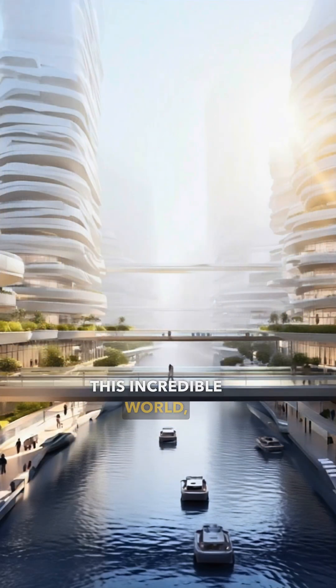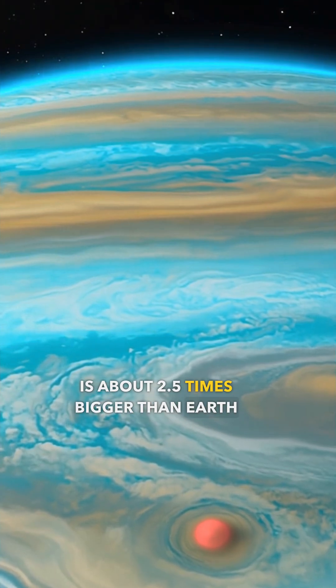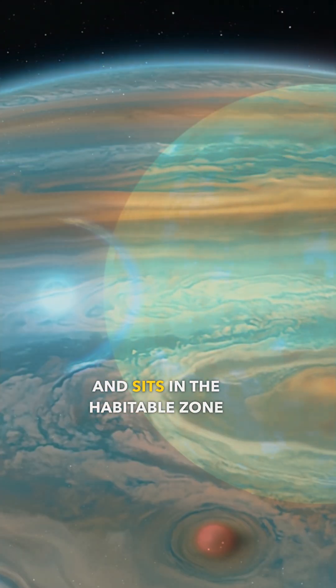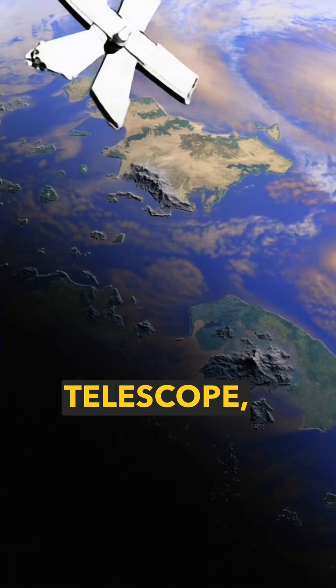This incredible world, known as a Hyacian planet, is about 2.5 times bigger than Earth and sits in the habitable zone of a red dwarf star. Using the powerful James Webb Space Telescope,